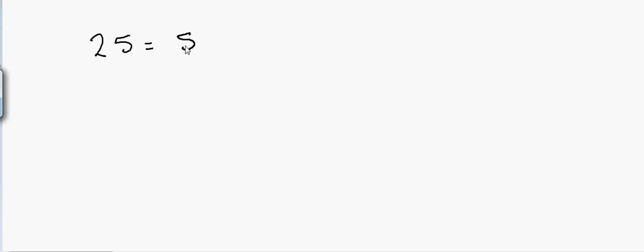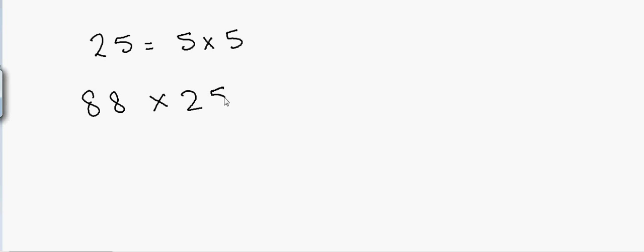If I have to multiply any number by 25, we know that 25 is equal to 5 times 5. So instead of dividing by 2, we will divide by 4. Suppose I have 88 and I want to multiply it by 25. In this case I will divide 88 by 4.